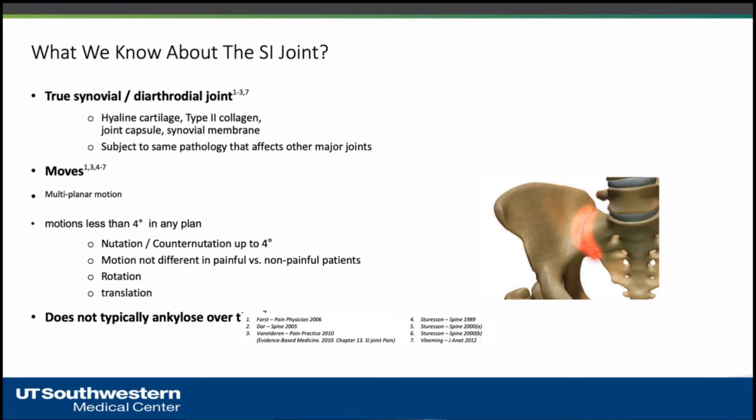I'm sure many of us don't believe that the sacroiliac joint moves, but there is very minimal motion. In men it is about two degrees, in women about four degrees. The most important motion is nutation — when we sit, the sacrum moves inward and inferiorly about two to four degrees — which is reversed when we stand up. There is also rotation and translation, but in general this is less than four degrees.